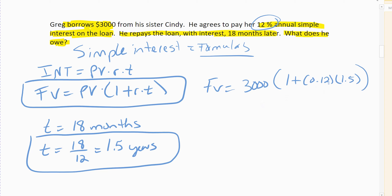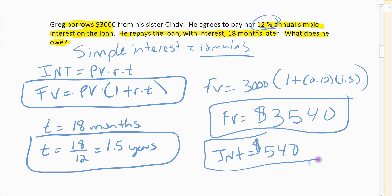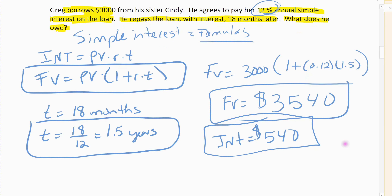The only set of parentheses you have to have are the big set, but you do need to have them first unless you're doing this piece by piece. Make sure you're careful when you plug it into the calculator that you follow the correct order of operations. So he has to pay her back $3,540. His interest was $540, and again, the reason it's so much is because that's a pretty big interest rate - Cindy's making a killing on this one! So, again, simple interest: you have to use the simple interest formula. The TVM solver is for compounding problems only - compound cases, sinking fund, and annuity/loan cases.